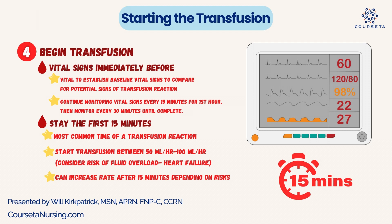According to hospital policy, most places want you to check vital signs every 15 minutes for the first hour and then every 30 minutes until complete. When you start a transfusion, consider the rate — typically start slower at 50 to 100 mLs per hour. For patients with heart failure who are at risk for fluid overload, start near 50 mLs per hour. Once that first 15 minutes is up and the patient is doing okay, you can increase the rate, typically between 100 and 175 mLs per hour, per hospital policy.